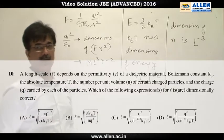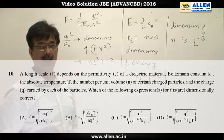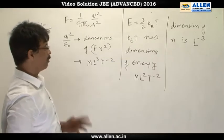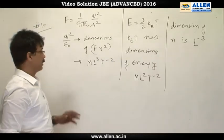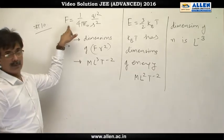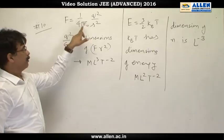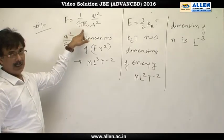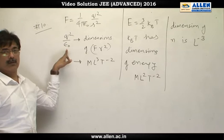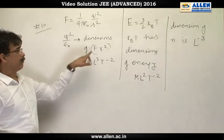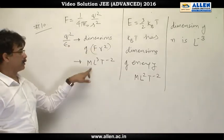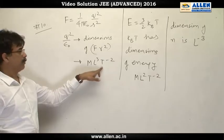Question number 10. This question is based on dimensional analysis and this question can be easily solved if we realize that from Coulomb's law, force is given by 1 upon 4 pi epsilon 0 q squared upon r squared. From Coulomb's law, we can easily derive the dimensional formula for q squared upon epsilon, which will be force into r squared and which comes out to be M L cubed T minus 2.